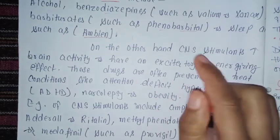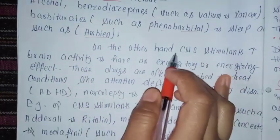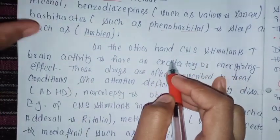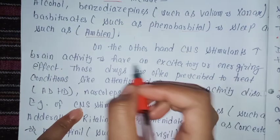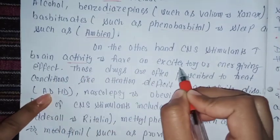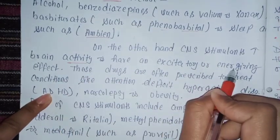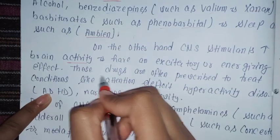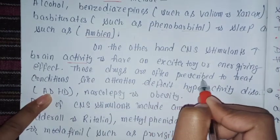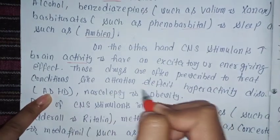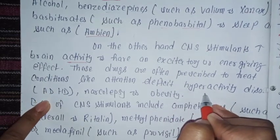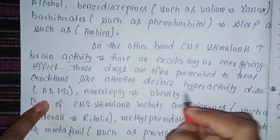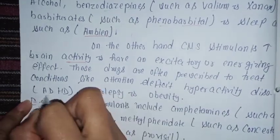CNS Stimulants increase the brain activity. Depressants slow down the brain activity, and Stimulants increase the brain activity and have excitatory and energizing effects. These drugs are often prescribed to treat conditions like attention deficit hyperactivity disorder, like ADHD.